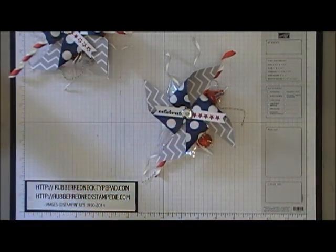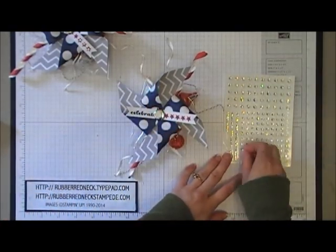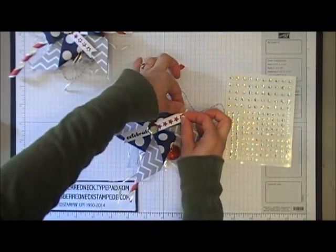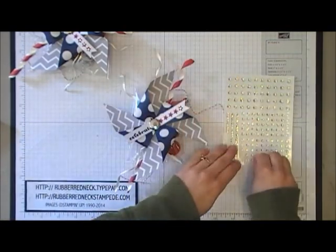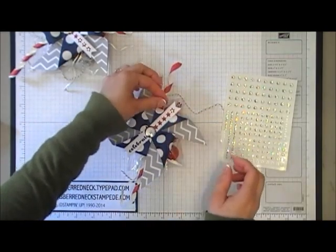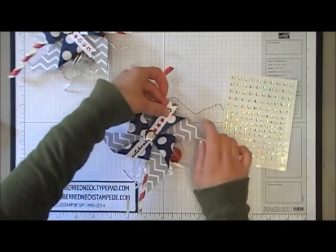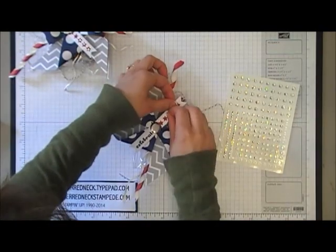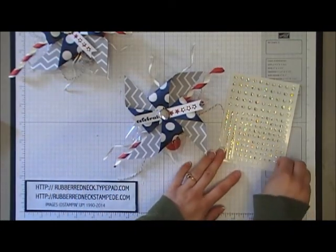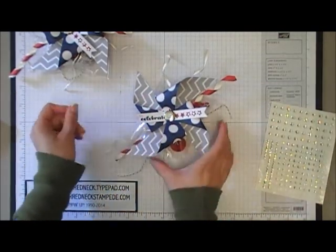And then to finish it, I just stepped it up by taking some rhinestone basic jewels, and I added them in here onto the little real red stars. Just place them right in the center. Just place them going down the center of your stars and work your way down until you get all of the stars with rhinestones on them. And then once you have all the stars with rhinestones, take another rhinestone and put it on the other end, right above the celebrate.